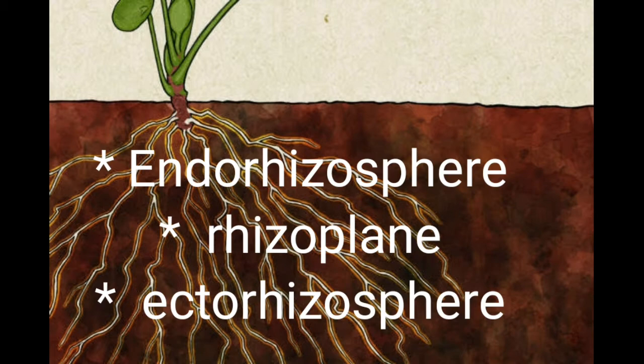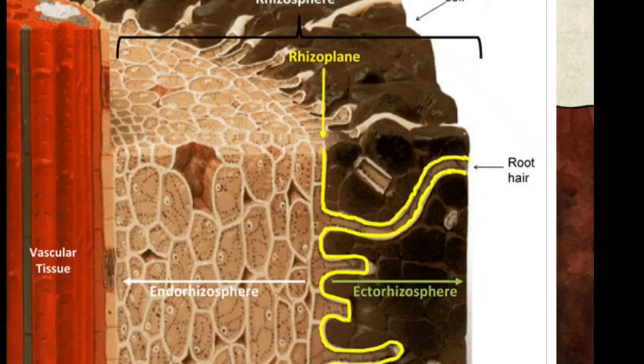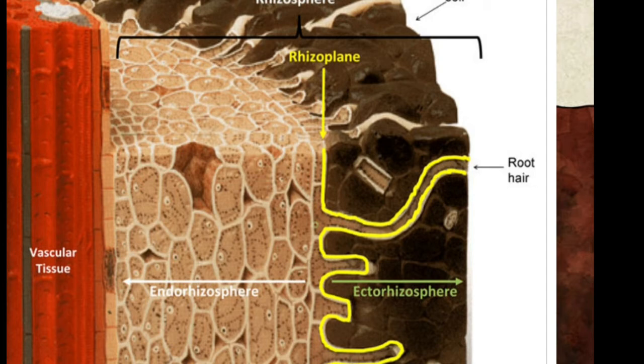The rhizosphere has mainly three parts: one is the endorhizosphere, second is the rhizoplane, and third is the ectorhizosphere. The endorhizosphere contains a part of the cortex and endodermis. 'Endo' means inside — the cortex cells have spaces between them which are occupied by microorganisms that reside and utilize nutrients inside the root.